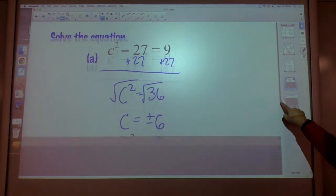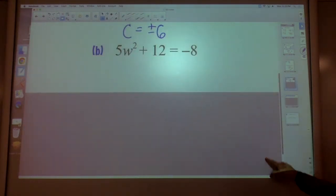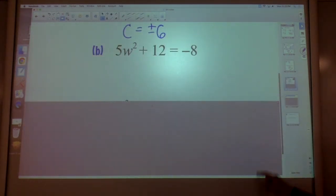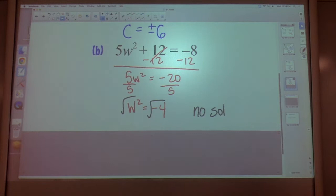All right. Try the next one. You've got 5w squared plus 12 equals negative 8, which means it's a two-step solving equation. Try it. You minused 12. Got negative 20. Divided by 5. Got negative 4. But then you reminded yourself you can't square root of negative, so there's no solution.